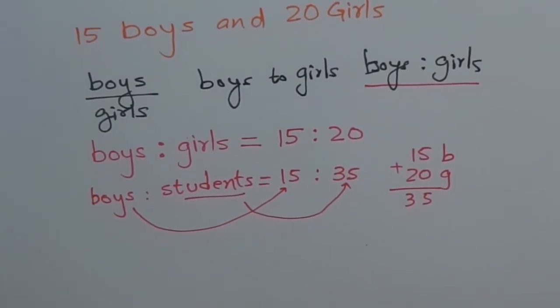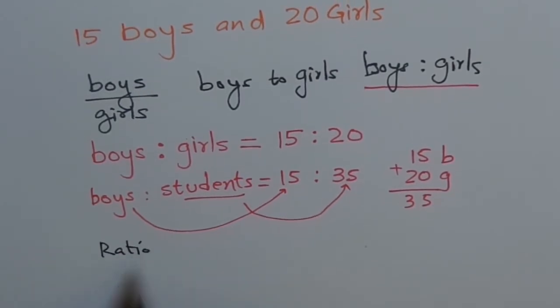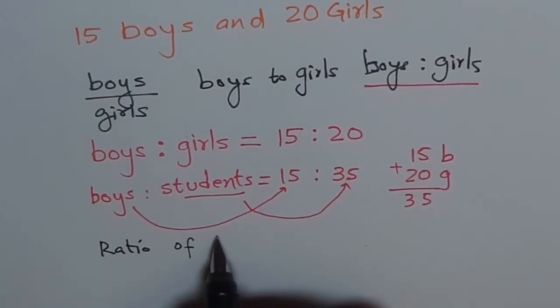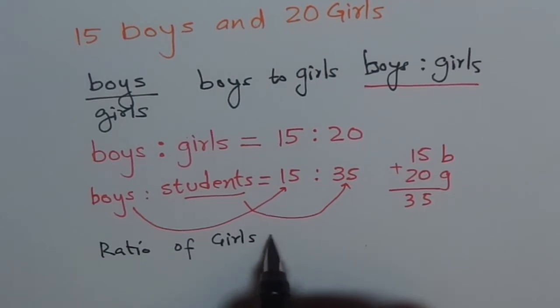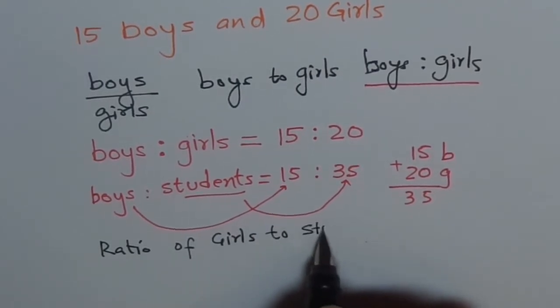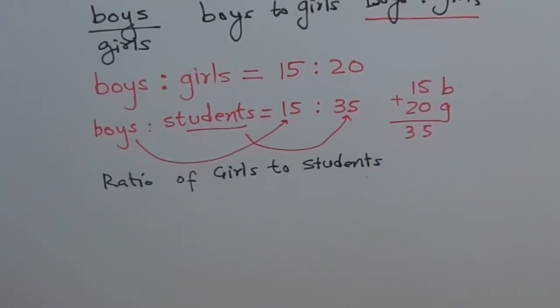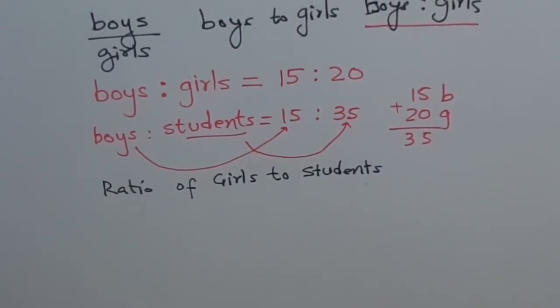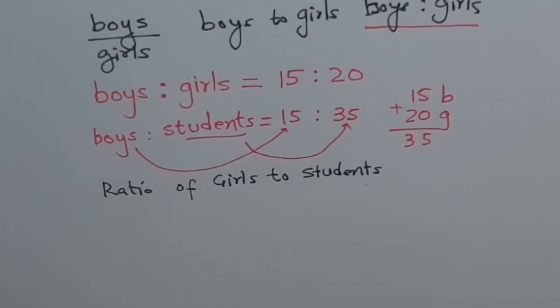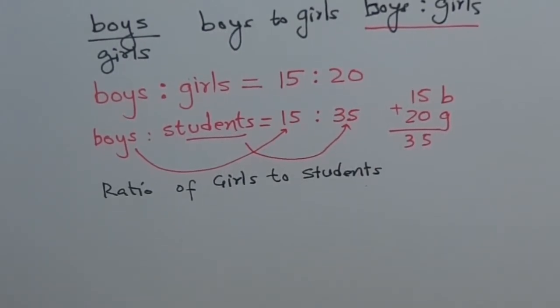Do you understand? Now for you the problem is to find ratio of girls to students. I think you get it. Do you get it? Girls to students. How many girls are there? 20 girls. And how many students? 35. Therefore ratio of students to girls is? Well you know it, so you can write it down.